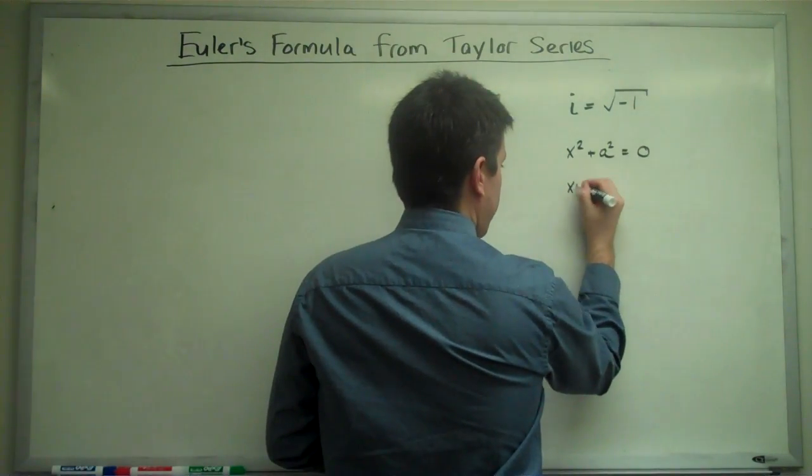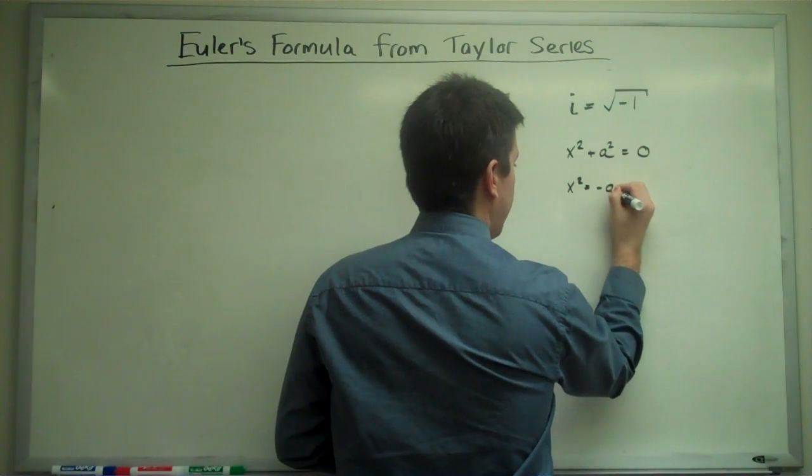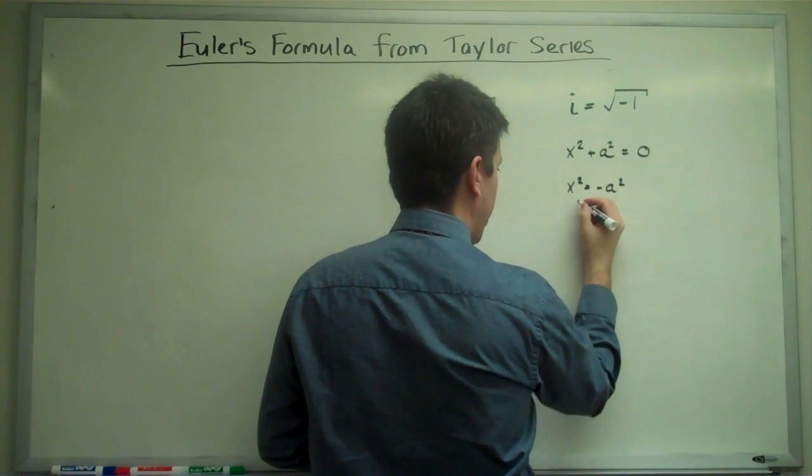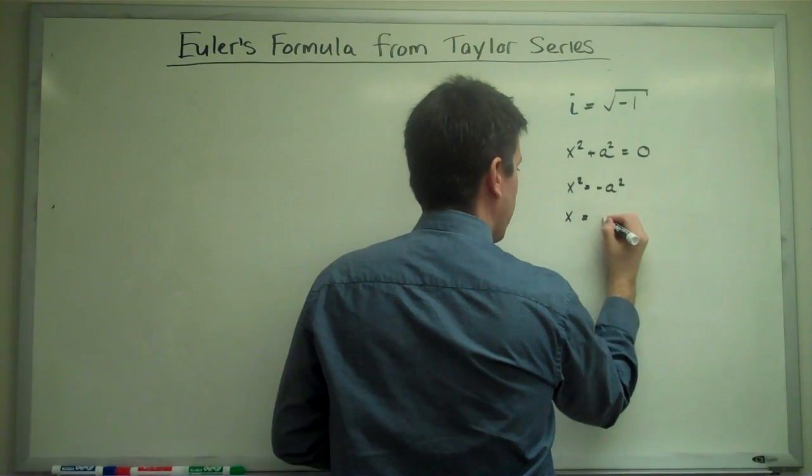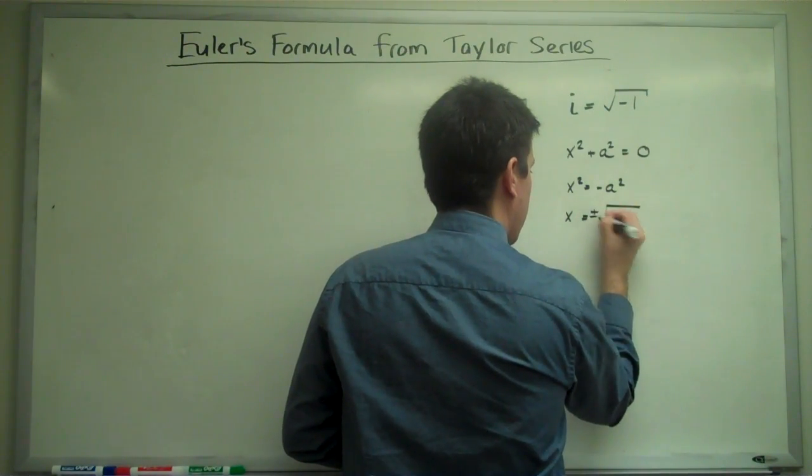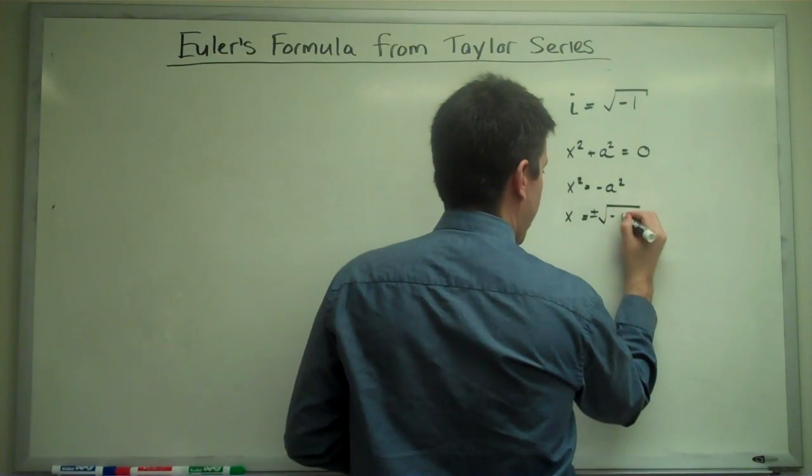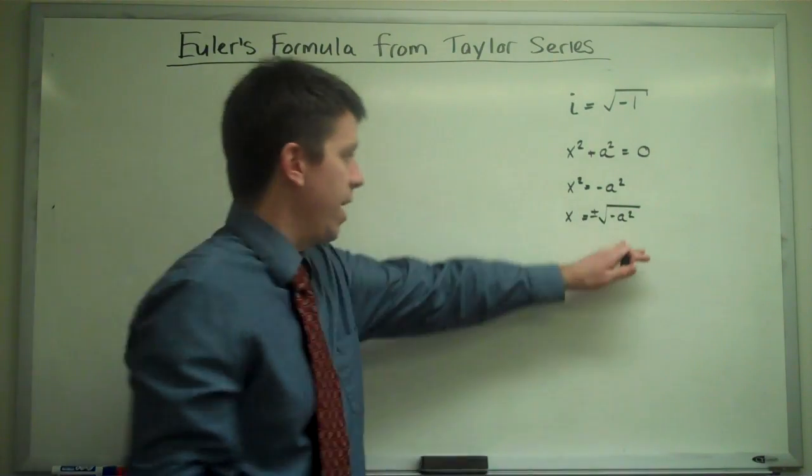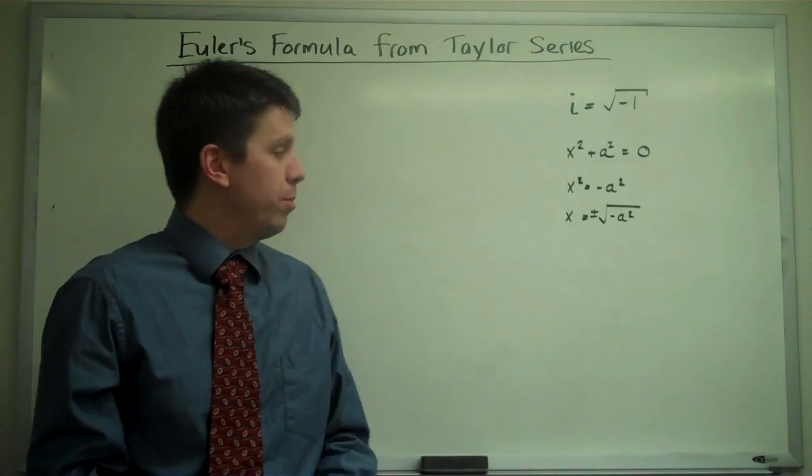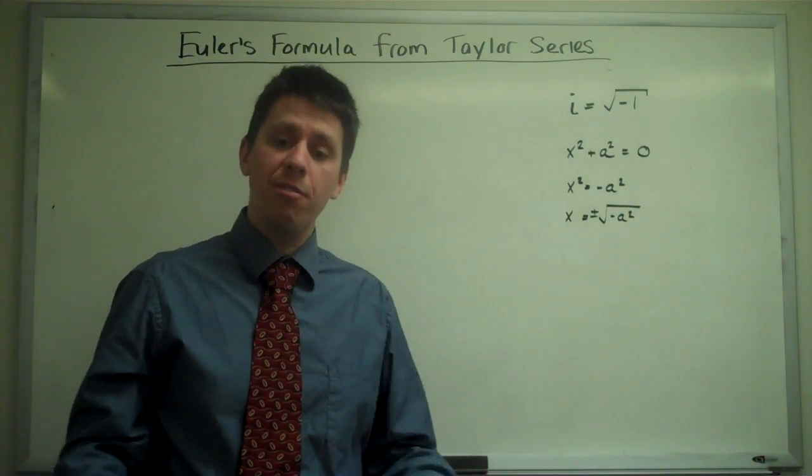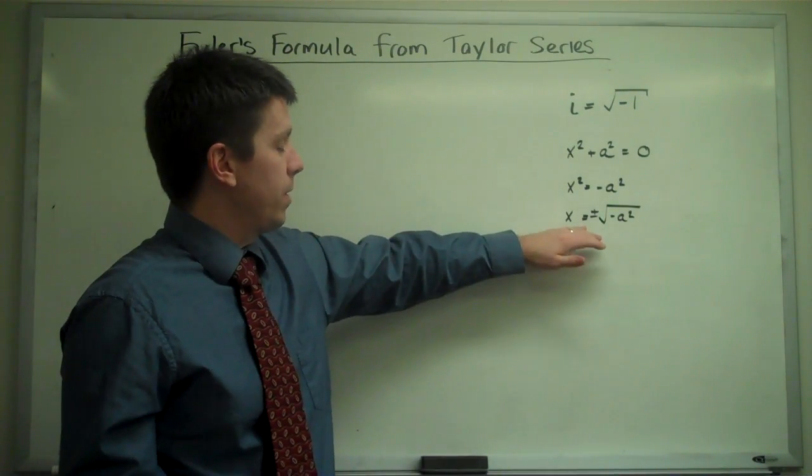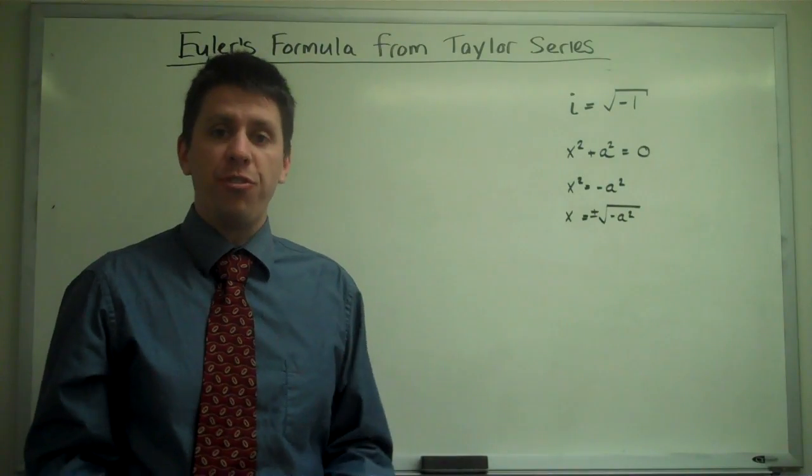Because we would try to solve it, we would say x squared is negative a squared, and then if we try taking square roots, plus or minus the square root of negative a squared. Well, that's a negative number. A squared would be positive, and so negative a squared would be negative. There's no way to solve for x with just the real numbers.